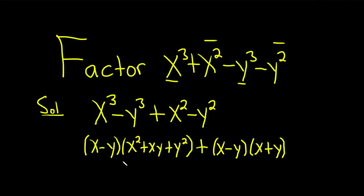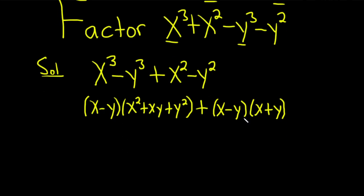All right, and so now we can actually pull out an x minus y. This will be x minus y. And I'm going to use a parenthesis here. So, x minus y times what is going to give us this?